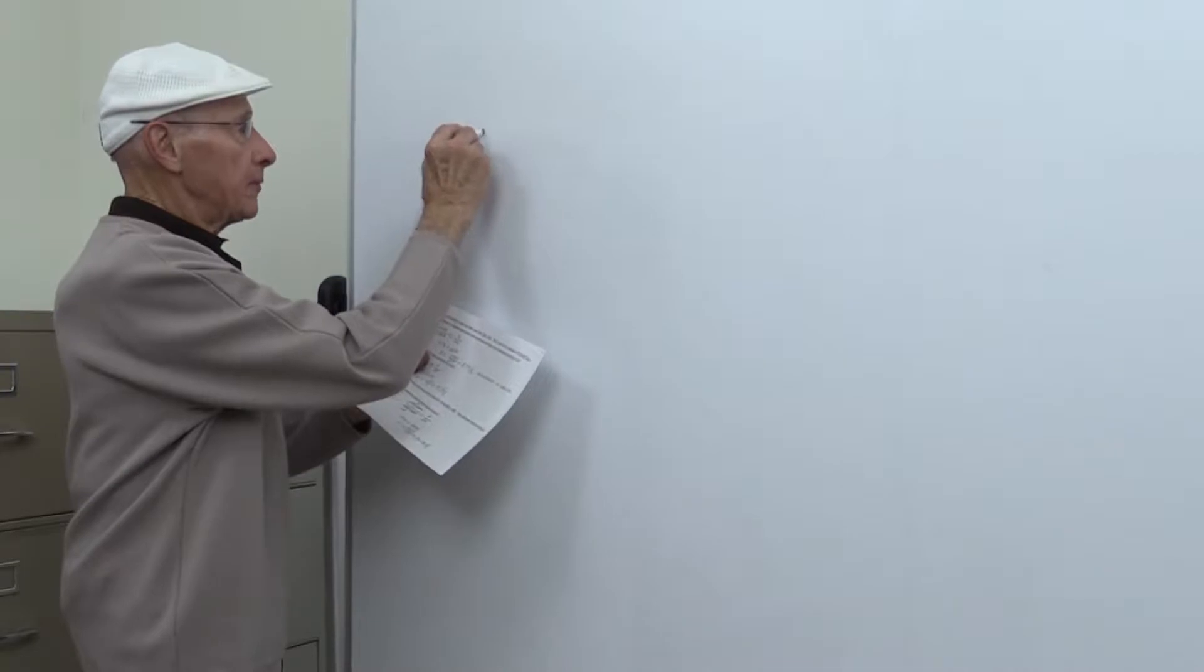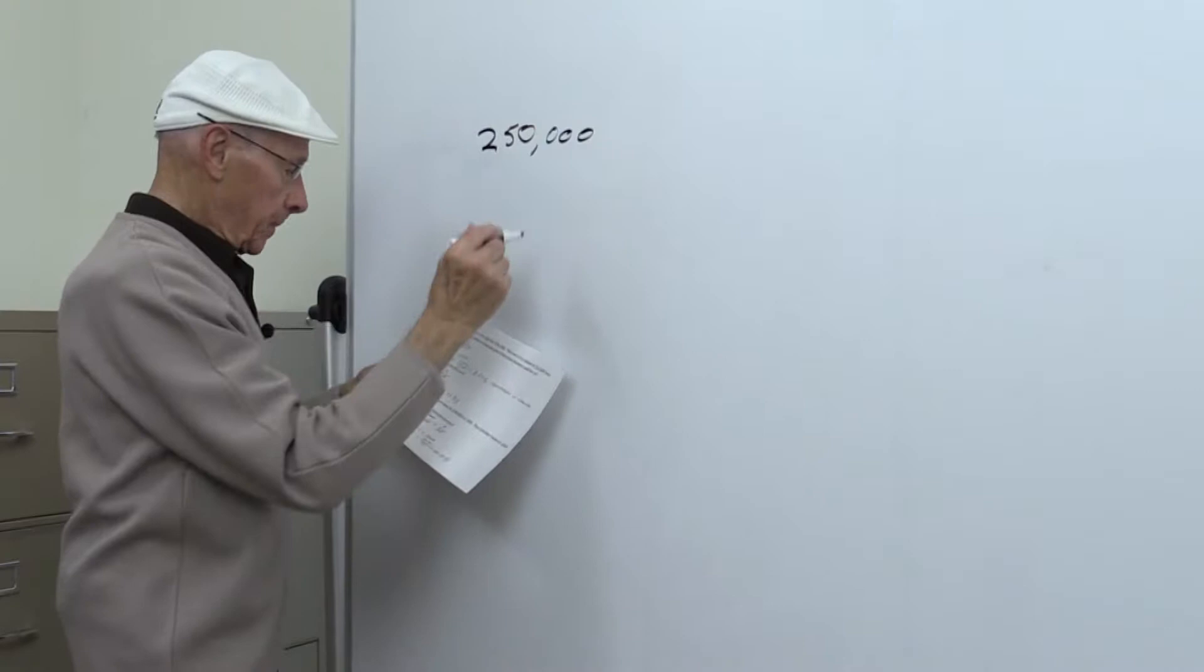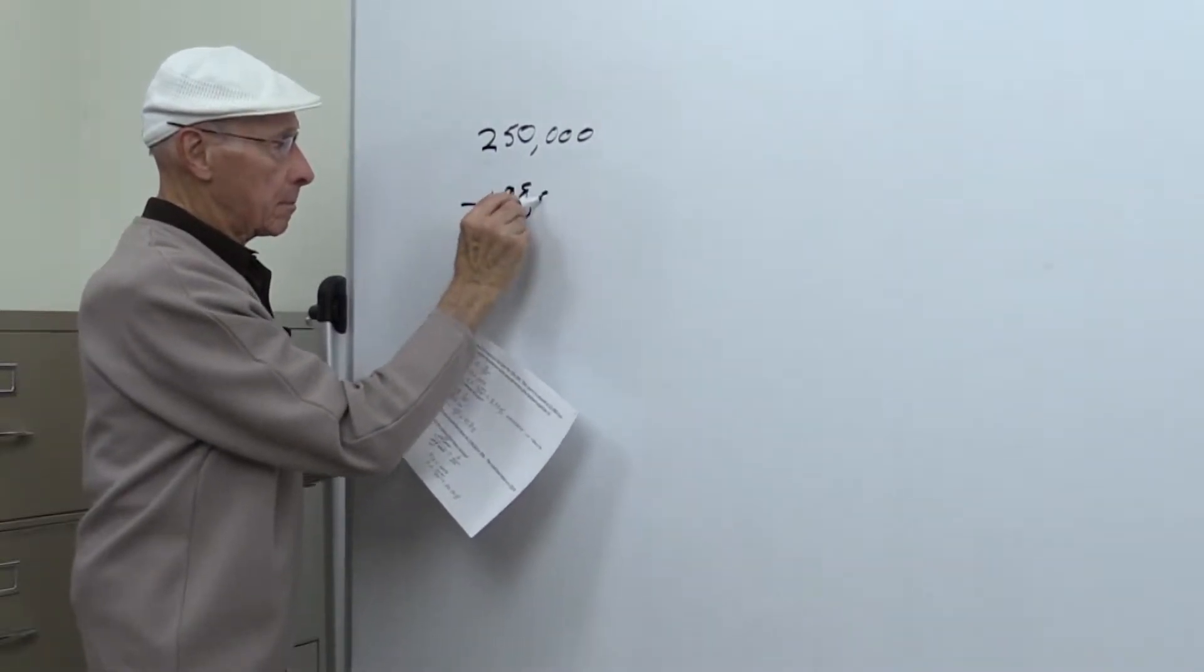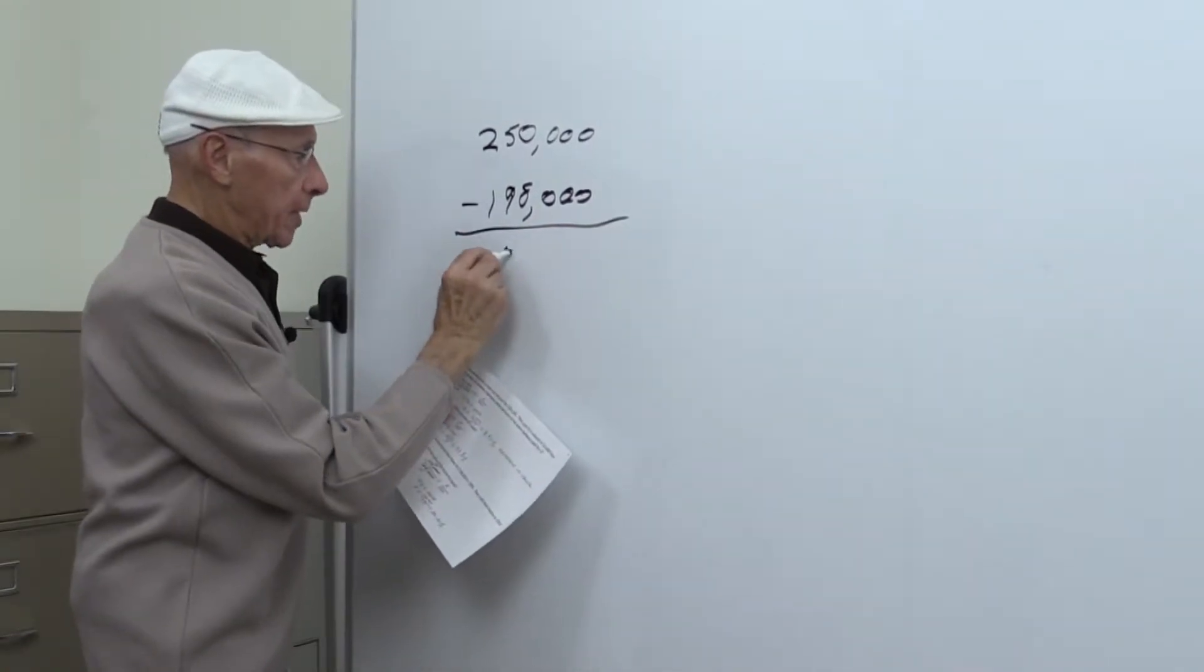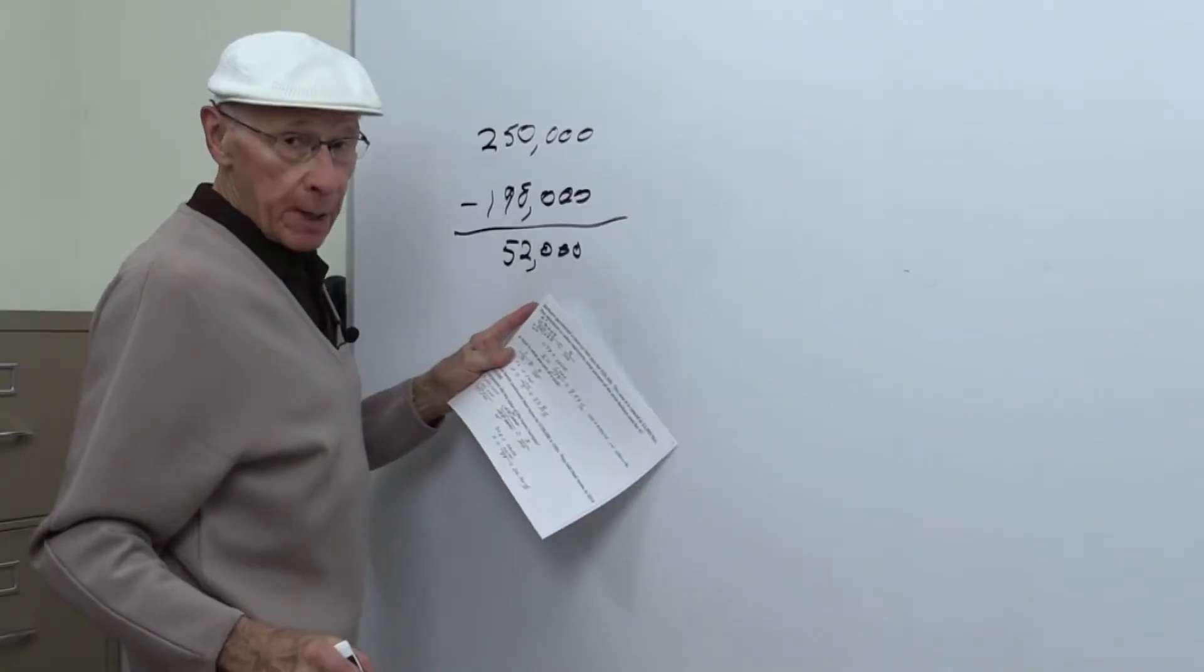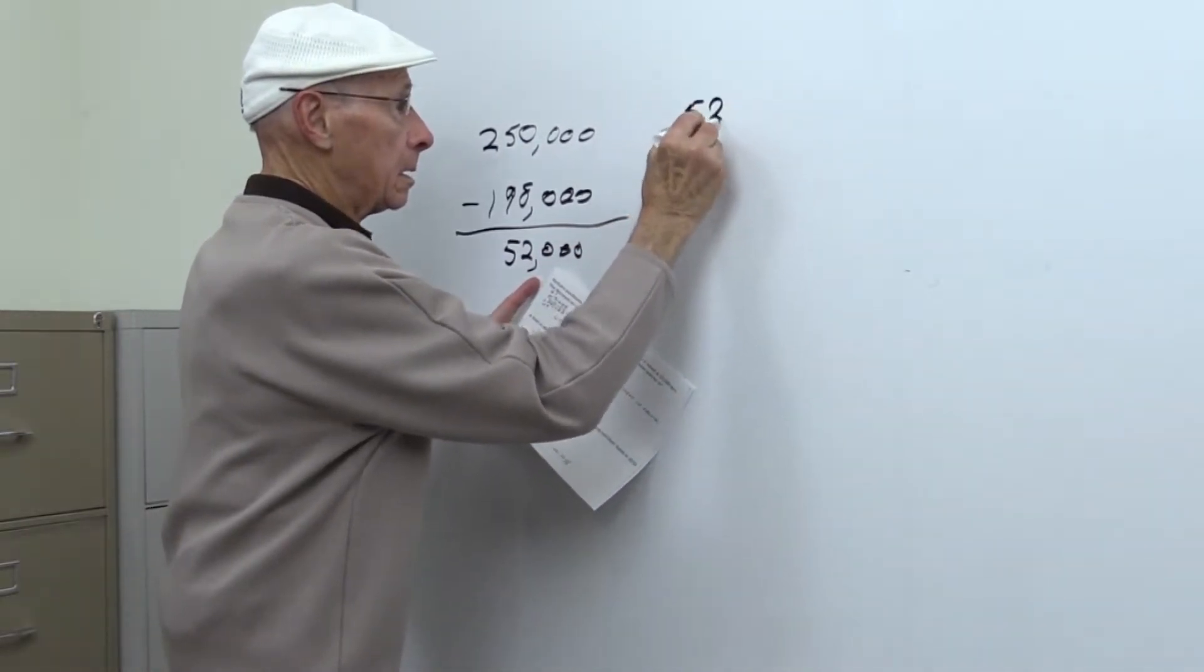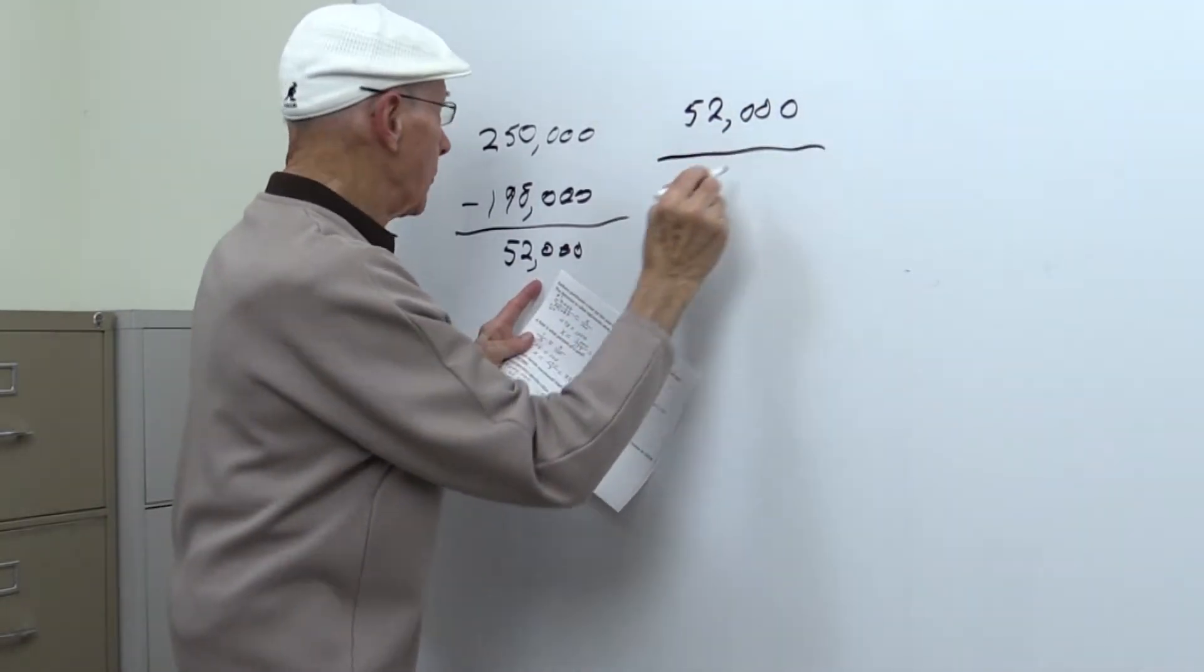You take the $250,000 and subtract, and that's $52,000. So now we take the $52,000 over $198,000.